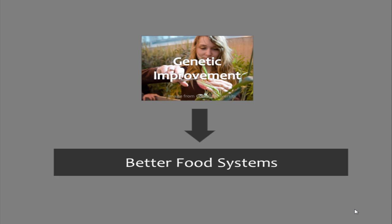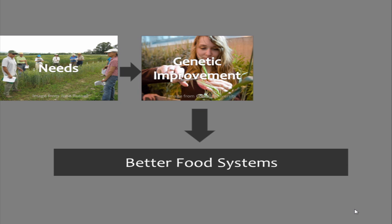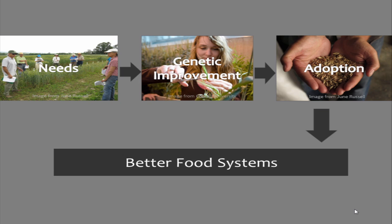There are many different objectives, and I feel like often as plant breeders we get caught up in these specific objectives and kind of forget the big picture. So I decided to zoom out about 30,000 feet: in my mind, we are looking to improve food systems through plant breeding, specifically through genetic improvements of plants. But there are two important pieces missing from this diagram — first, we need to know the needs.